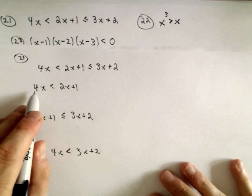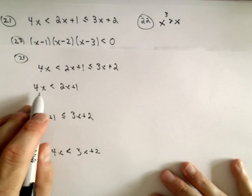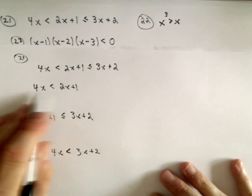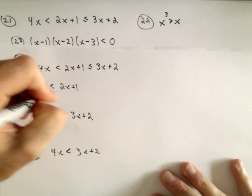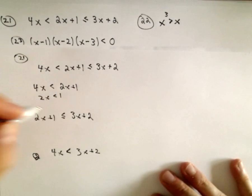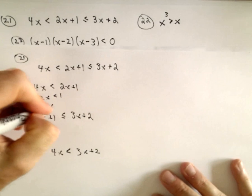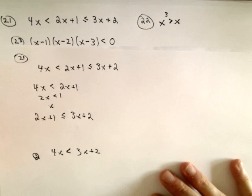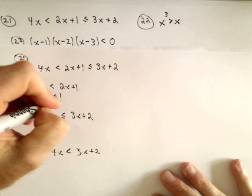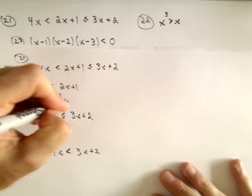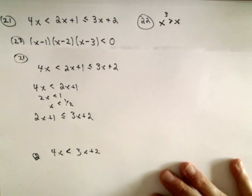To solve the first inequality, we can just subtract 2x from both sides — we'll have 2x less than 1. And if we divide, that says x is going to have to be less than one half.